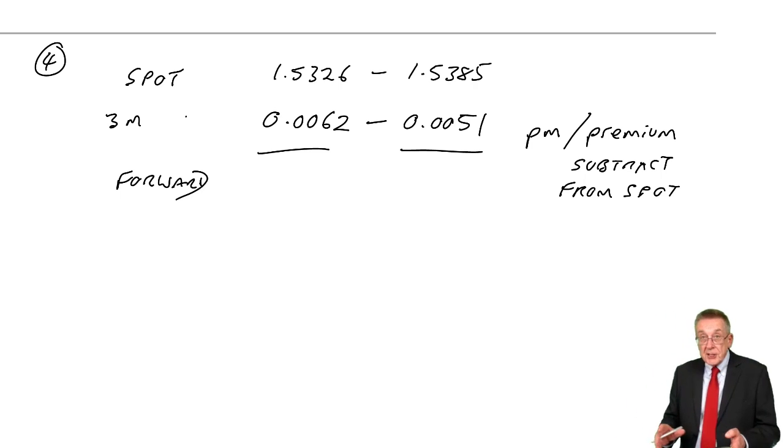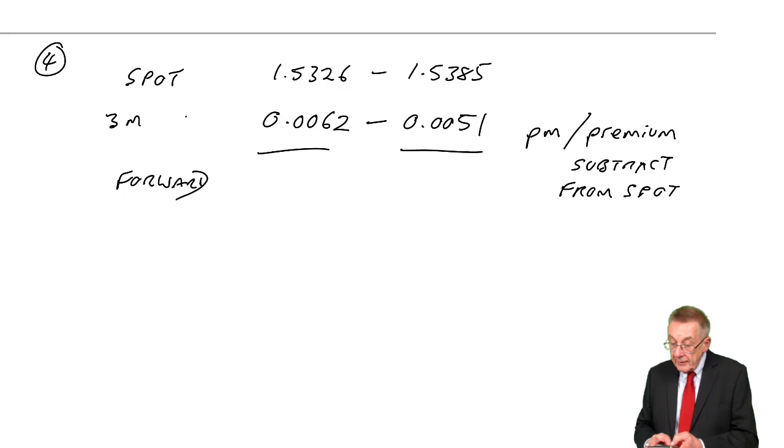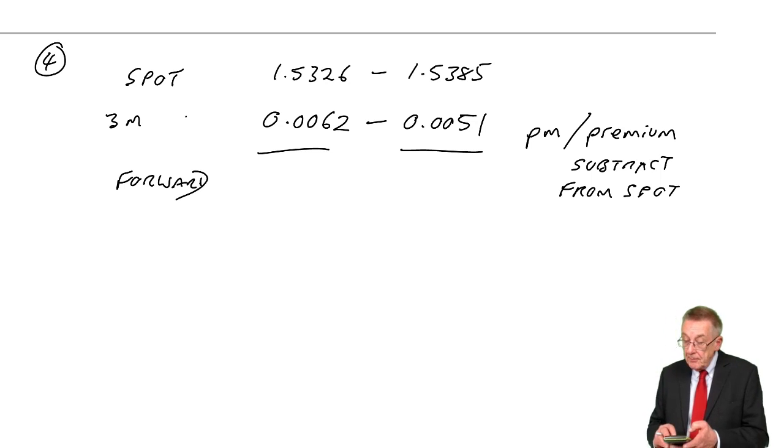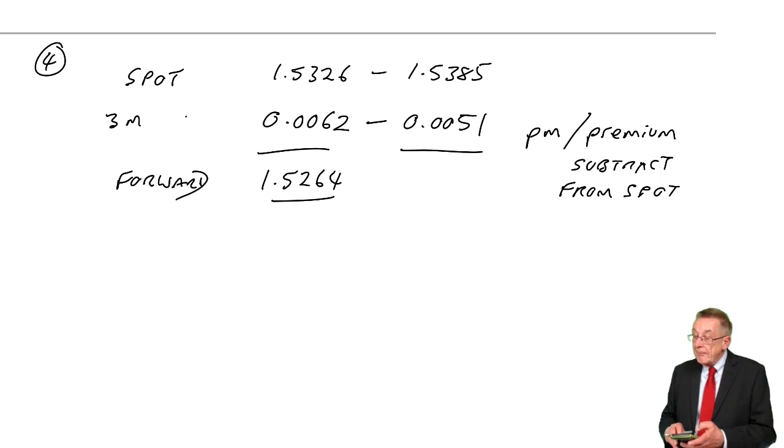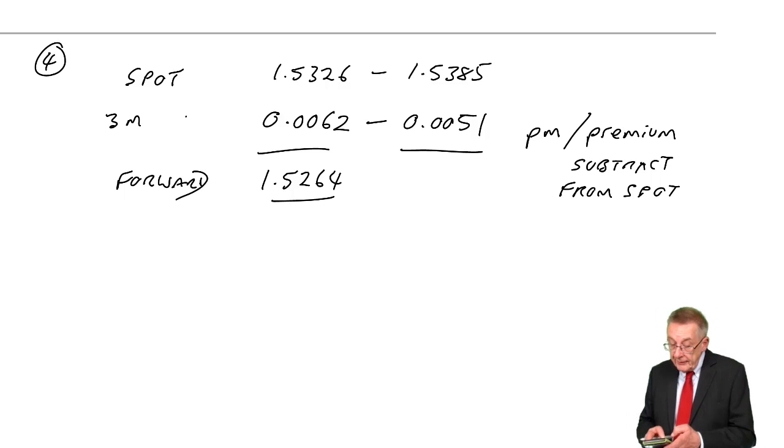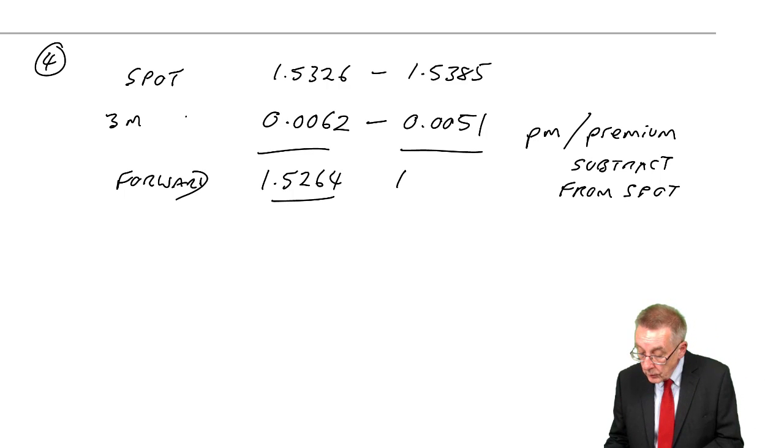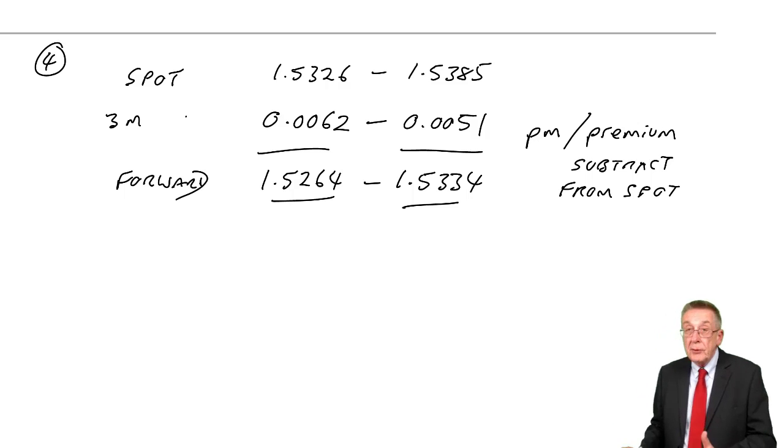So, subtracting, before I explain why, 1.5326 minus 0.0062 gives us 1.5264. 1.5385 minus 0.0051 gives us 1.5334. And there is the forward rate.